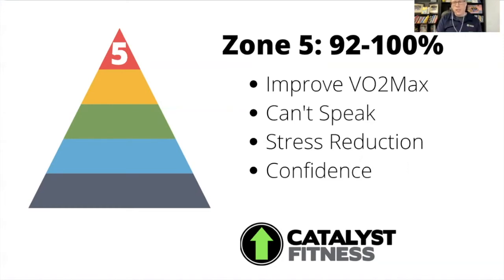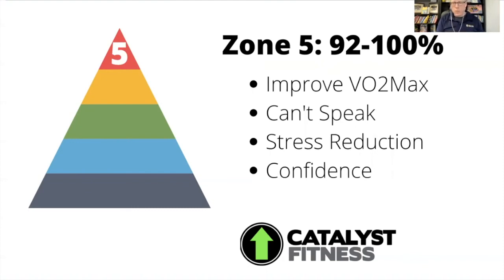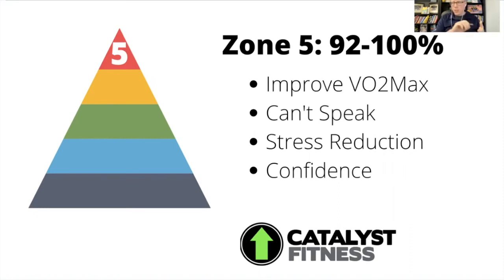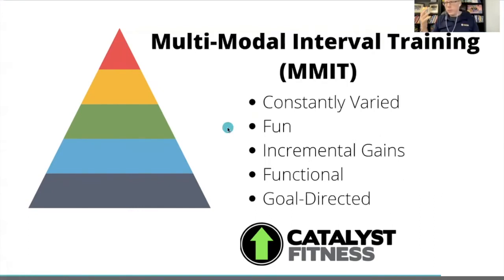There is value to all of these zones, and the optimal prescription really depends on your goal. Most experts who think about health span agree: you need mostly zone two with some zone five. Zone two gives you fat metabolism, improved circulation, and decreased risk of type 2 diabetes. Zone five gives you improved VO2 max, preserved and built lean muscle tissue, increased speed and power, ability to develop force — super important as you age — plus stress reduction and confidence from doing hard things.